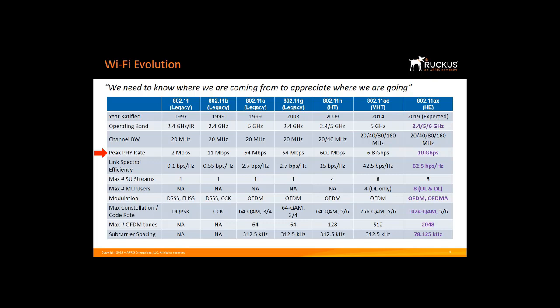People talk about high throughput, but what really matters is how well we utilize the spectrum. High throughput sells products because it's easy for everyone to understand, but what really matters is how well the standard uses the available spectrum. This is measured by link spectral efficiency. The first standard could push 0.1 bits per second per hertz. Today, with 11ax, we're pushing 62.5 bits per second per hertz. The standard is becoming more efficient in utilizing the available spectrum.